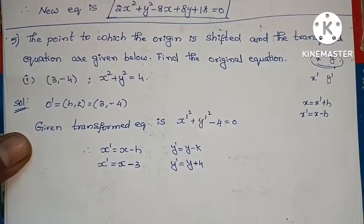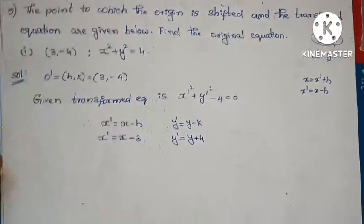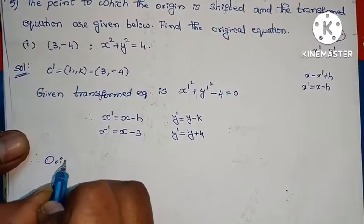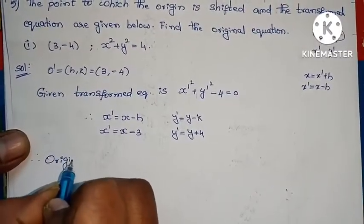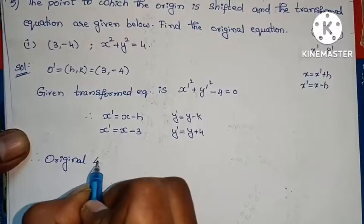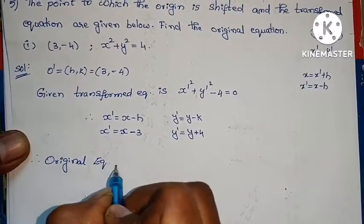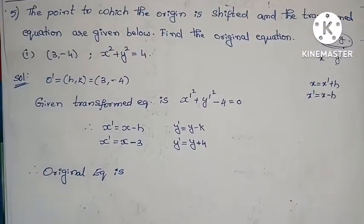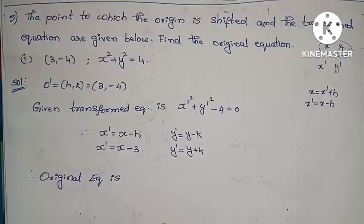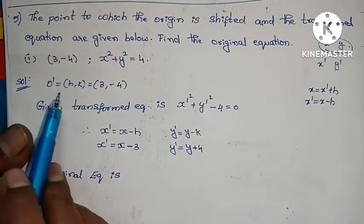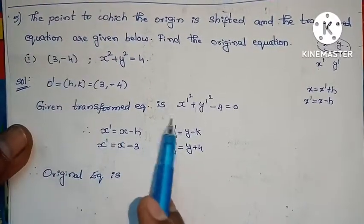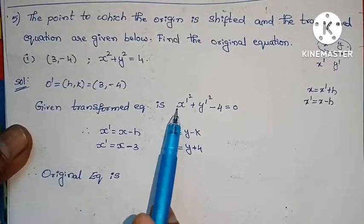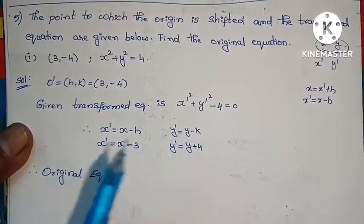Now substituting x dash and y dash values to find the original equation. The origin shifted point o dash is given, and the given transformed equation has x dash square and y dash square terms.